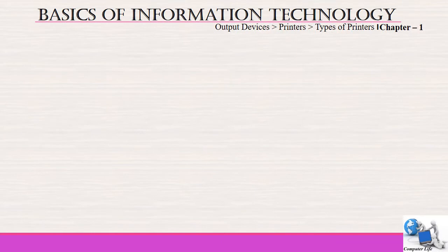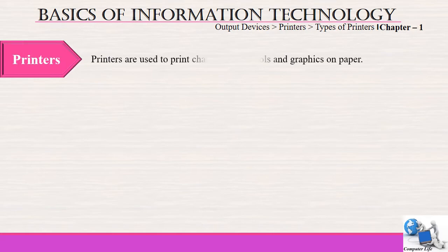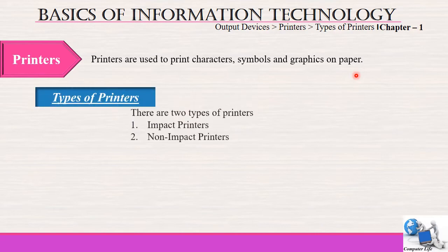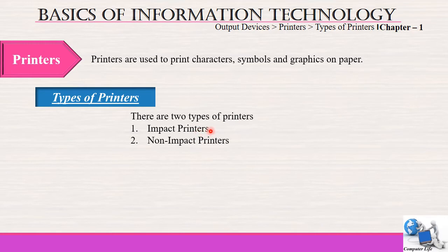After a detailed discussion on screens and their types, now we will study printers, the second type of output device. Printers are used to print characters, symbols and graphics on paper, and we can use that paper as per our need. There are two types of printers: the first one is impact printers and the second one is non-impact printers.